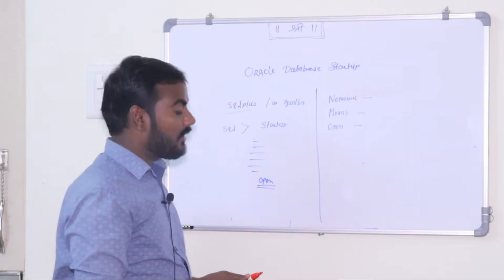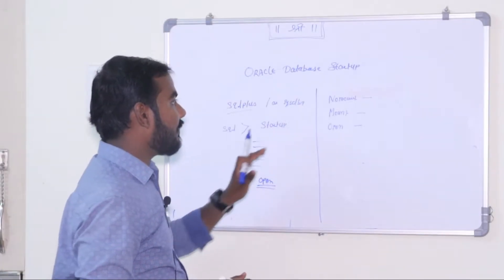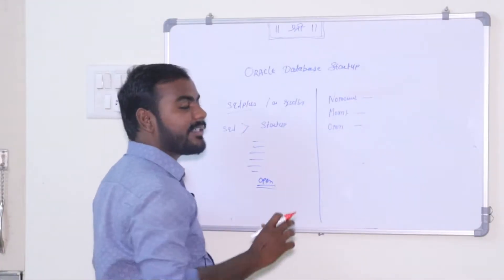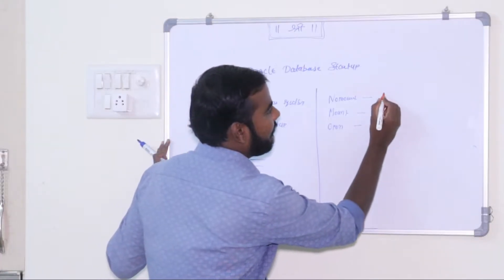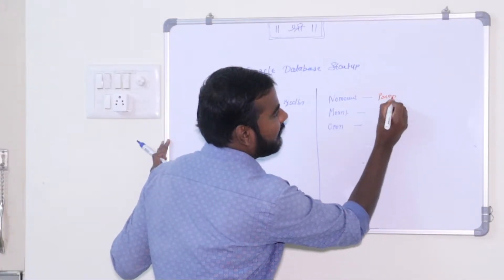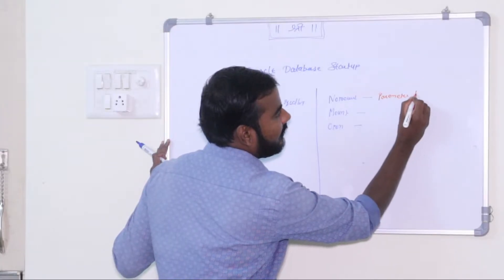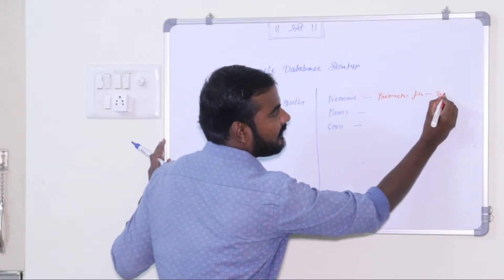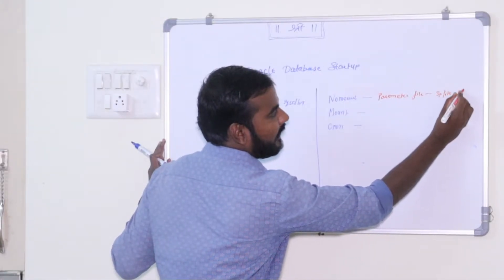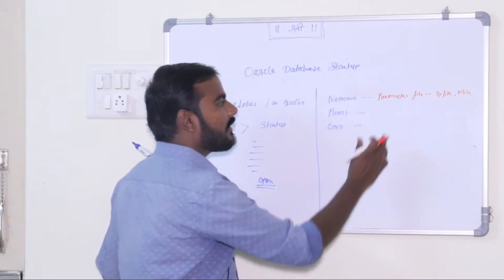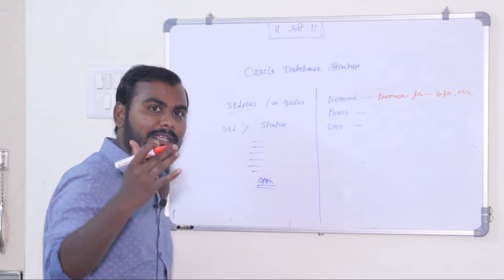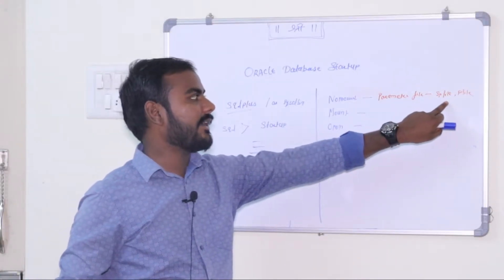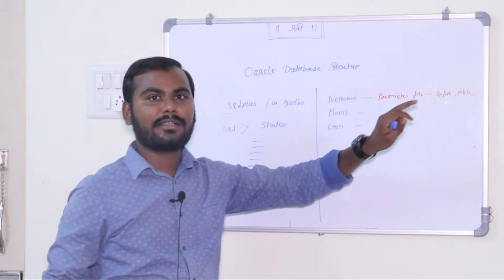When the database is in the No Mount stage, first of all the database will try to find out the parameter file. We have two kinds of parameter files: the SP file and the P file. The location of these files is inside Oracle Home slash dbs, where you will find the init file which is the P file, and also the SP file.